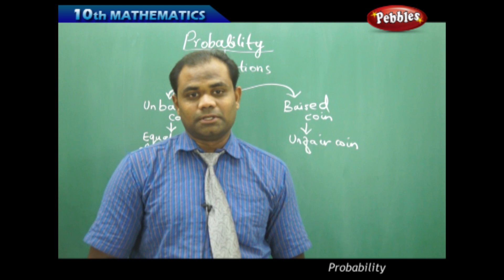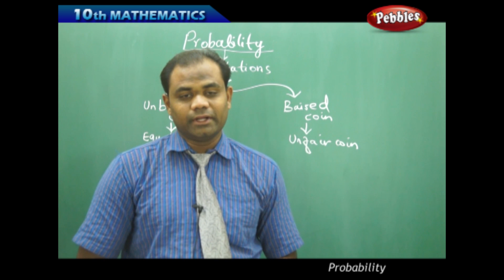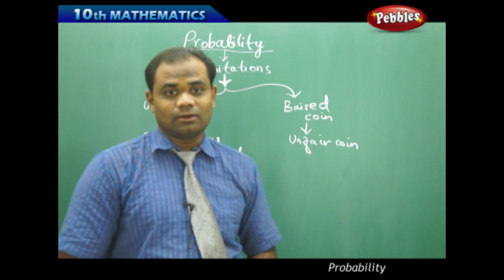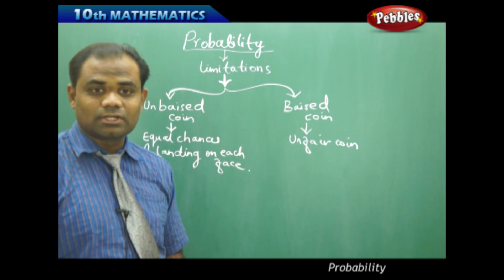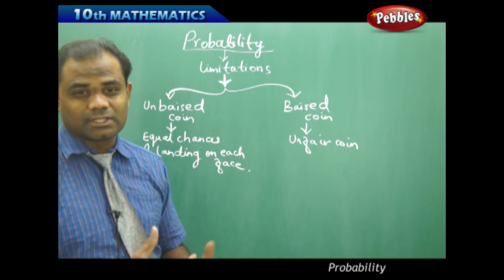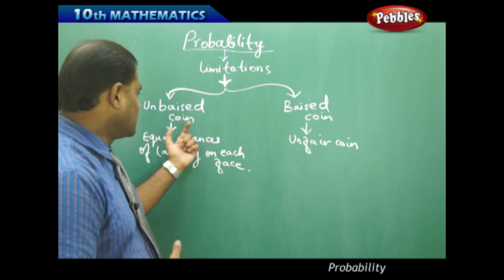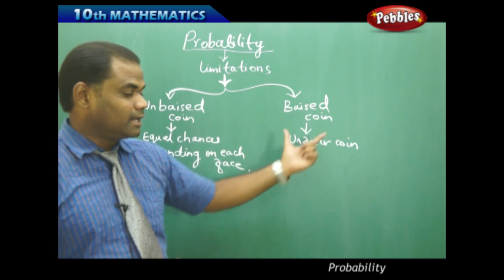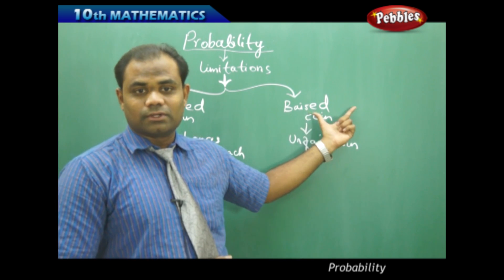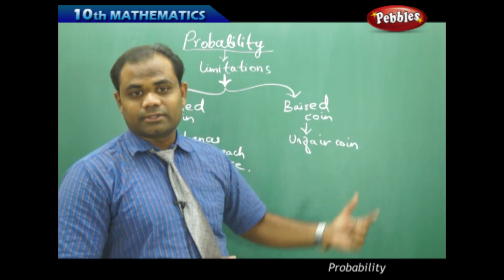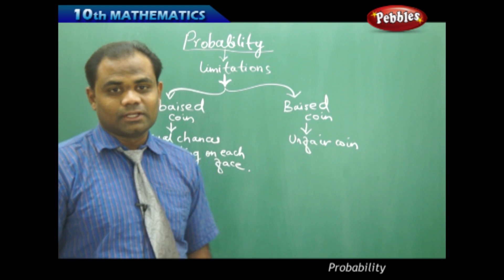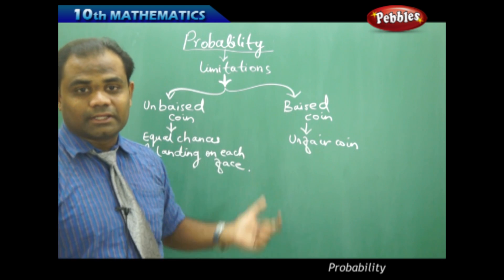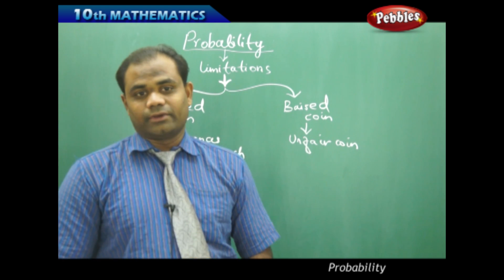In probability, it is very important to decide whether a chosen coin or dice is biased or unbiased. If it is biased, we do not take it into consideration. If it is an unbiased coin, we take that into consideration for our probability calculations.